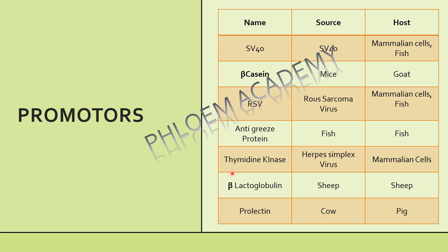Let's quickly summarize. SV40 is obtained from SV40 virus and can be used in mammalian cells and fish. Beta casein is obtained from mice and can be used in goat. RSV is obtained from Rous Sarcoma Virus and can be used in mammalian cells and fish. Anti-freeze protein promoter is obtained from fish and used in fish only. Thymidine kinase is obtained from Herpes simplex virus and can be used in mammalian cells. Beta lactoglobulin is obtained from sheep and can be used in sheep. Prolactin is obtained from cow and can be used in pig. This is all about the main promoters, which is highly important for Part B. Do not skip this portion because it can earn you too much.